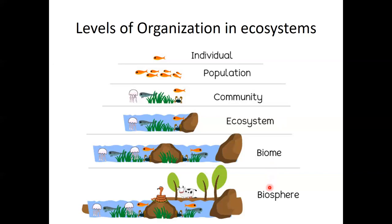When we get to the biosphere, it is all of the living and non-living things from the atmosphere down to the ground — basically the entire world. If you could imagine being in space and looking back towards Earth, that's the biosphere: the atmosphere, the land, the water, all species grouped in populations forming communities, adding abiotic things for an ecosystem, multiple ecosystems forming a biome, all coming together in the biosphere.